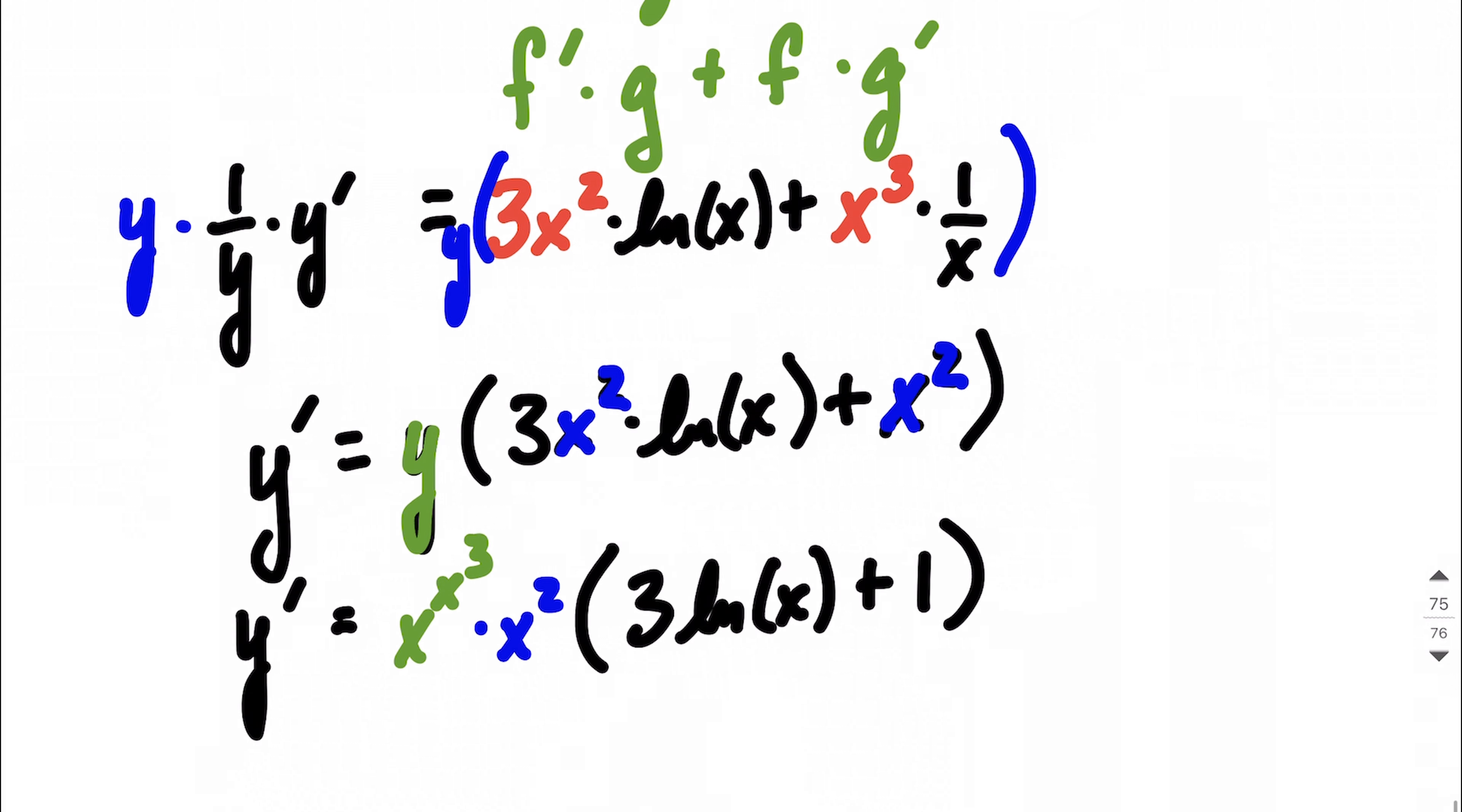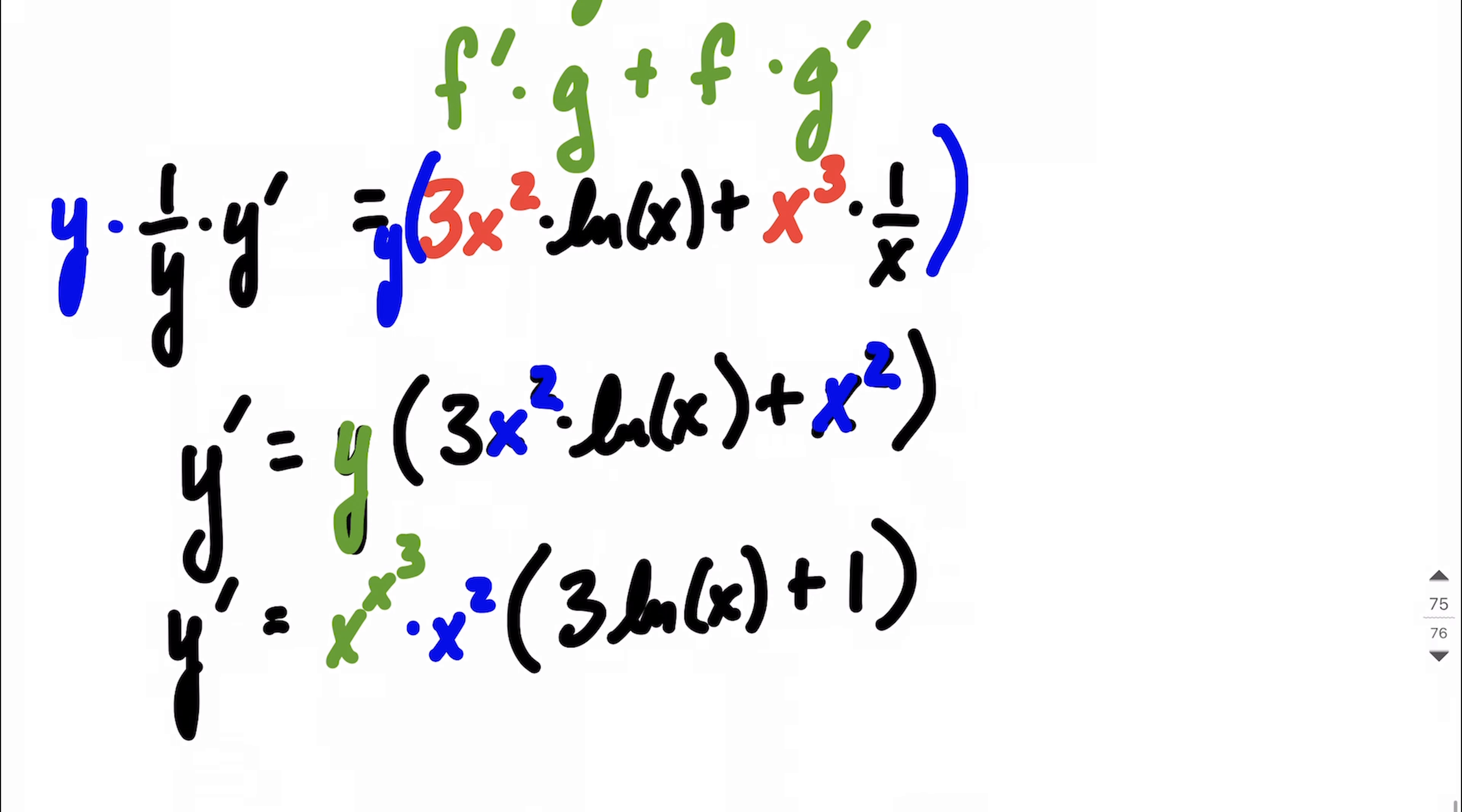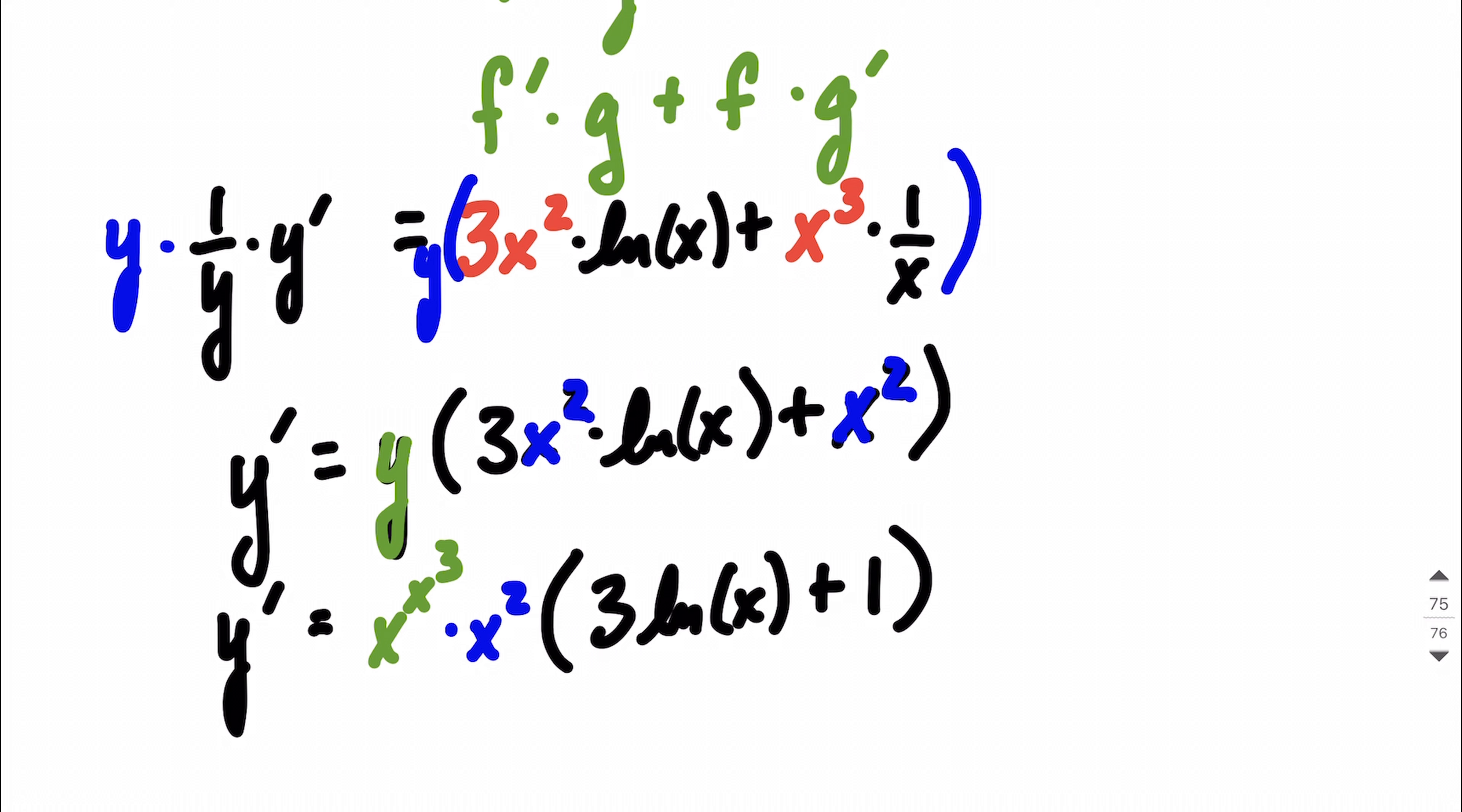So there's our derivative using implicit differentiation. The next thing is we want to figure out when do we have a horizontal tangent line. So the horizontal tangent line is going to occur whenever the slope of that tangent line is 0, or that means the same thing as saying when is our derivative equal to 0.